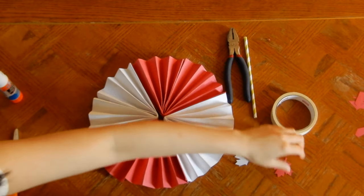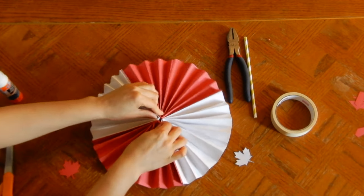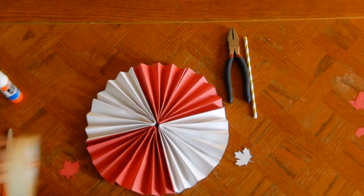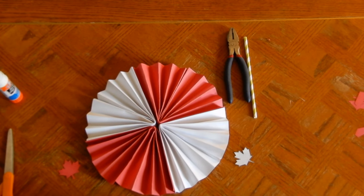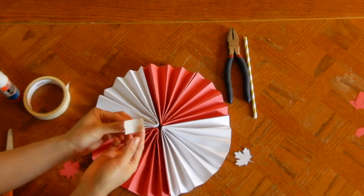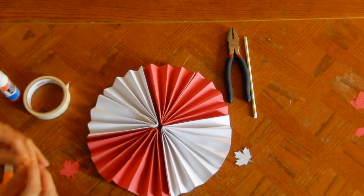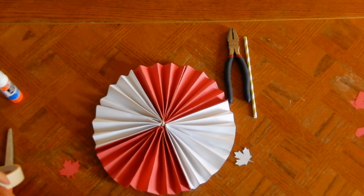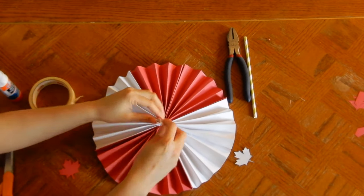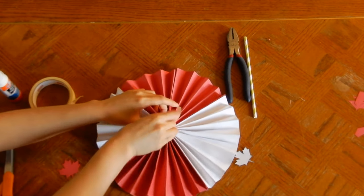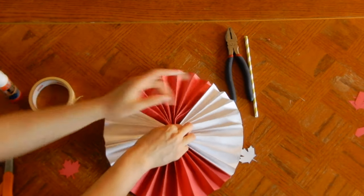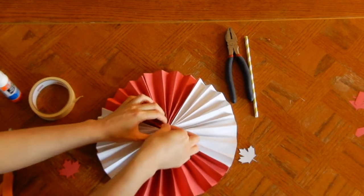Once you feel like it's strong and it's dry, you're just going to tape the middle together so it sticks. I'm first going to put tape in between all four quarters. And then I'm going to tape the opposite sides together just to reinforce the middle and make sure that they stay together.